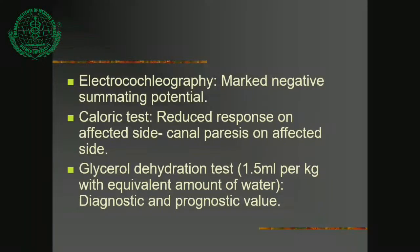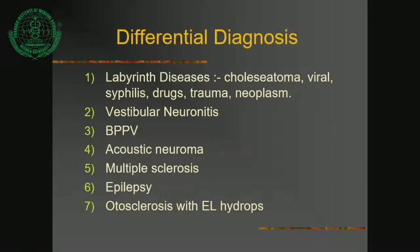The differential diagnosis of Meniere's Disease includes other labyrinthine diseases such as cholesteatoma, viral infection, syphilis, ototoxic drugs, trauma, or neoplasm, as well as vestibular neuronitis, BPPV, acoustic neuroma, multiple sclerosis, epilepsy, and otosclerosis.